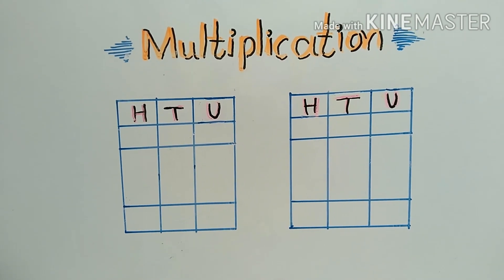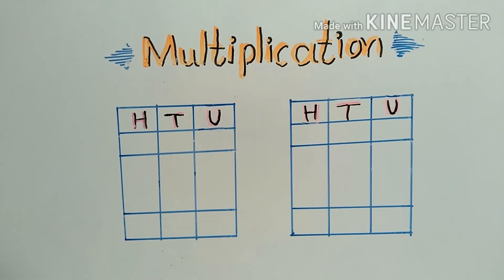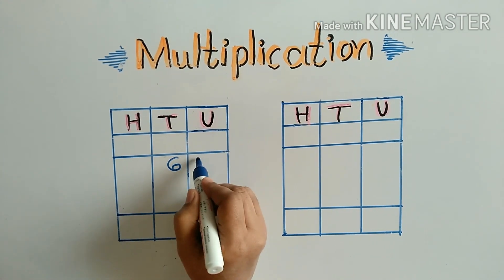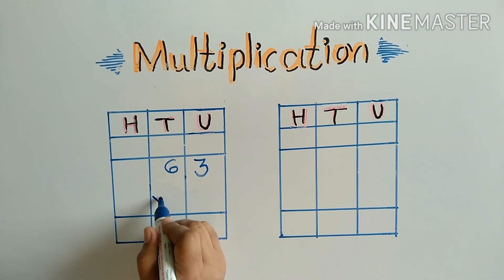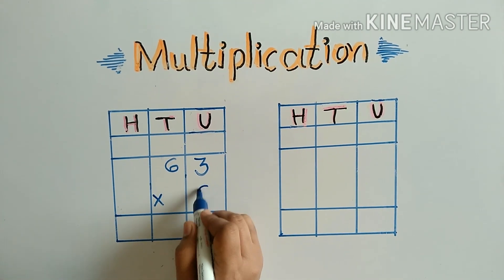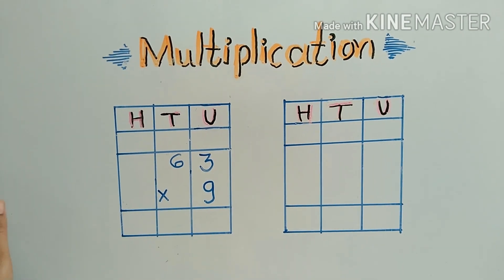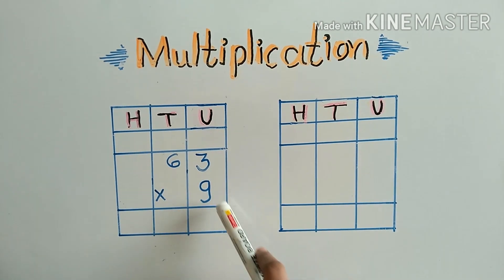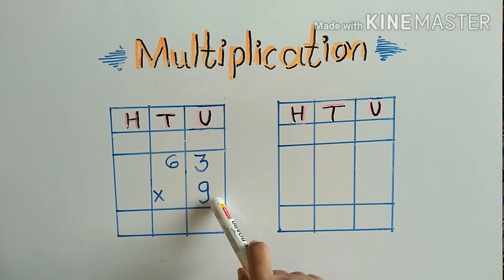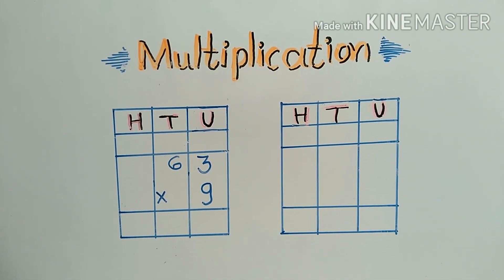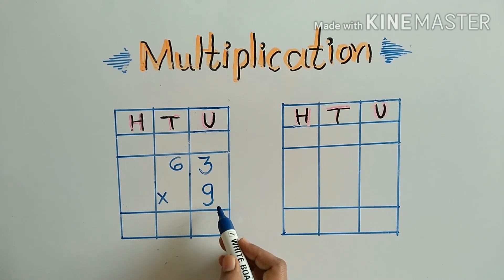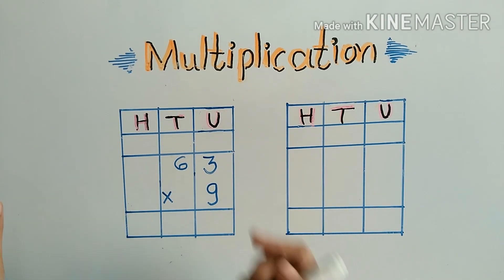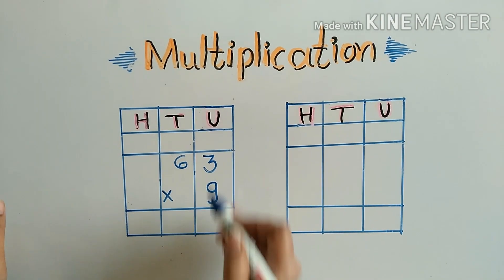Students, we will take another example: 63 multiplied by 9. In this example 63 is the multiplicand and 9 is the multiplier. Now we have to multiply 9 by 3, because 3 is the units digit. We always start multiplying with the units digit. 9 threes are 27.